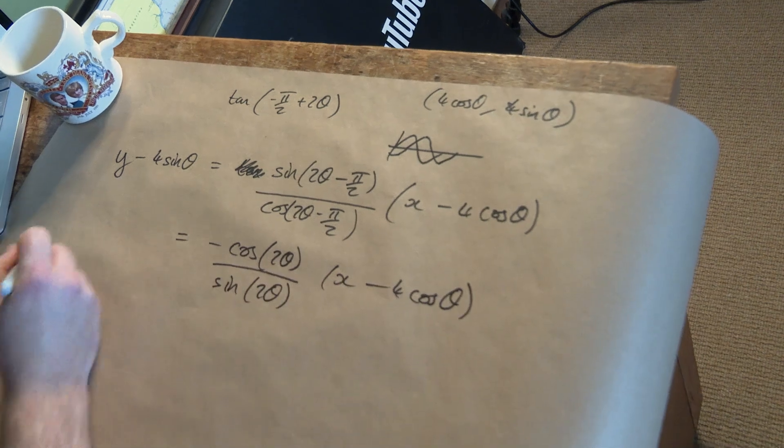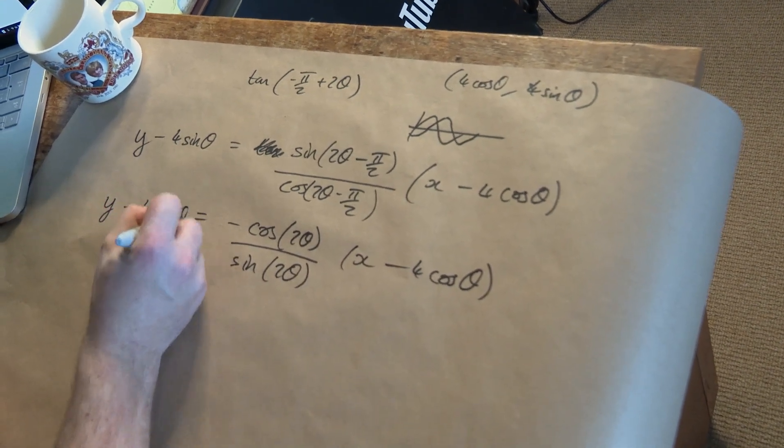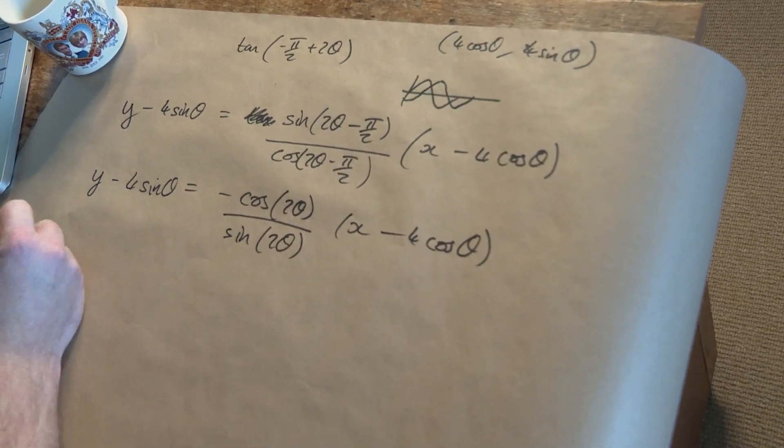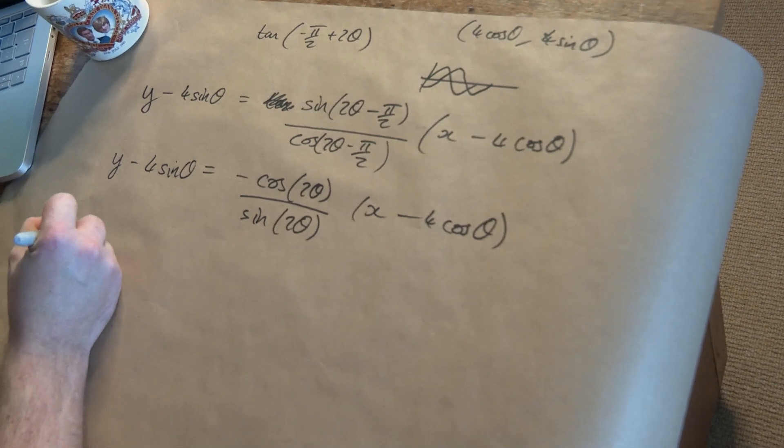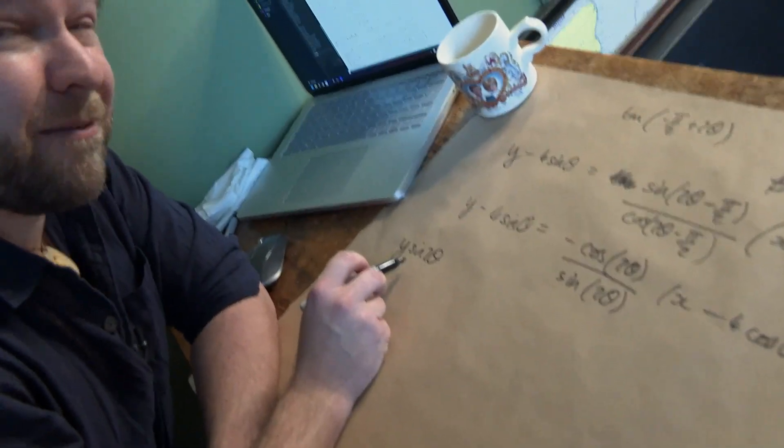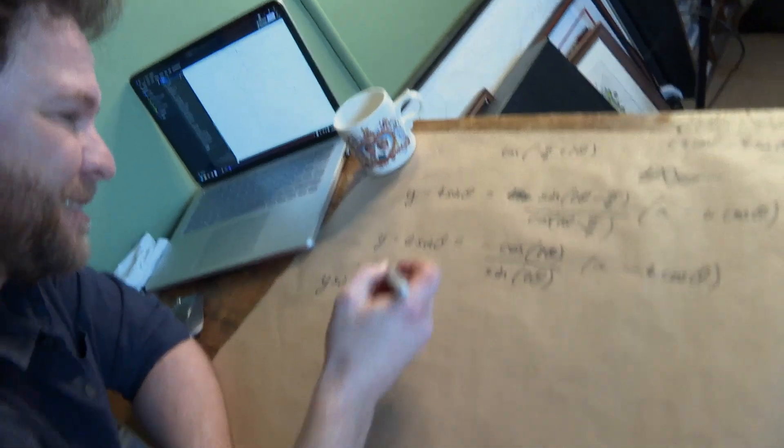And now I'm just in happy algebra land, tidying this thing up. Multiply everything by sine 2 theta, y sine 2 theta. That term is familiar from earlier, I'm hoping that stays as it is, so fingers crossed.